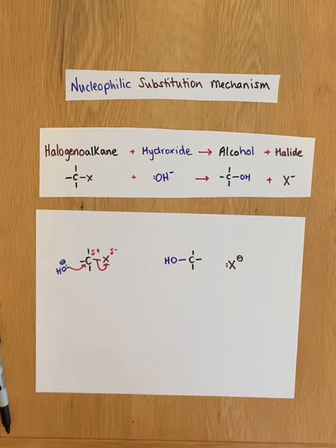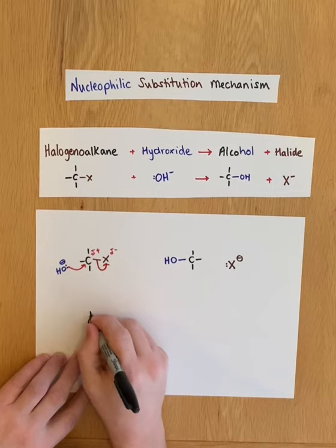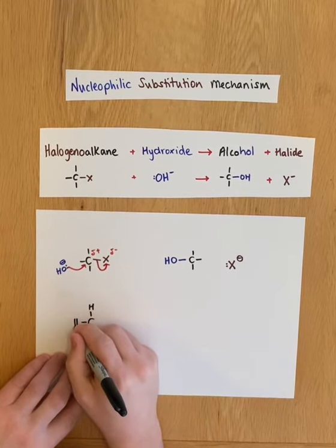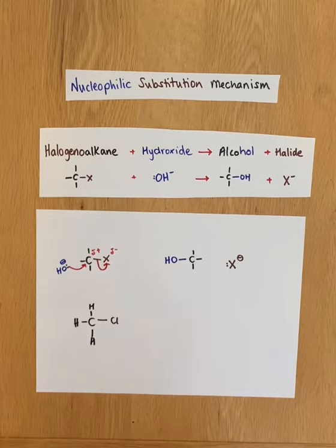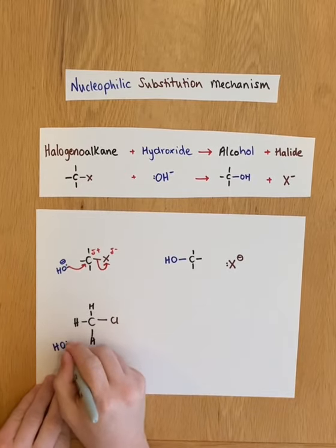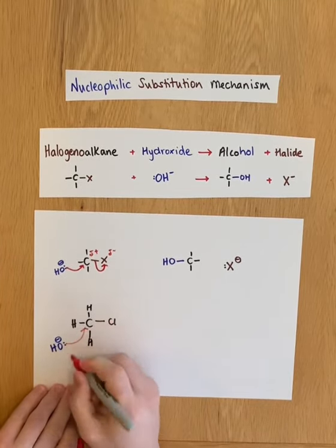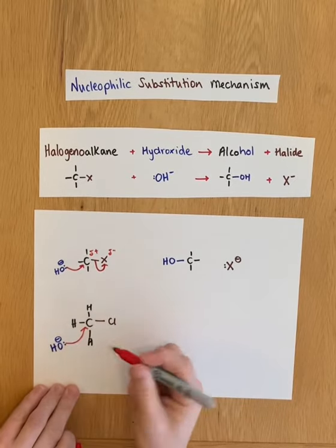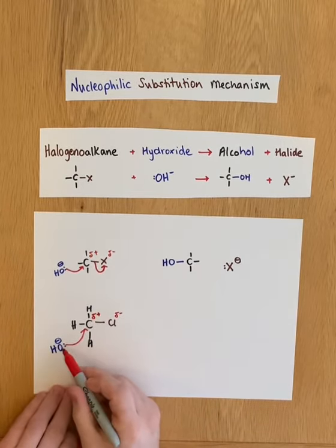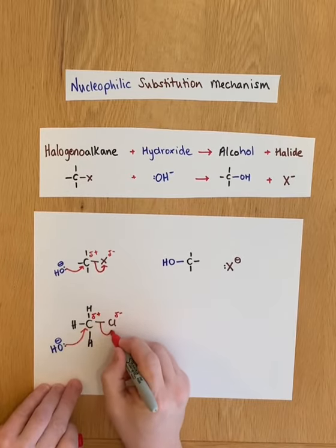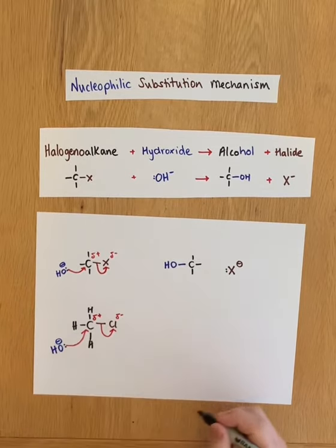If we do an example, what about chloromethane? If I use the same colors, so chloromethane reacting with aqueous hydroxide ions, the pair of electrons, this lone pair, will form a bond to the delta positive carbon. Now I should, in my mechanism, show that this is delta positive, which is why the nucleophile attacks it. While this pair of electrons is forming this new bond, the pair of electrons in the carbon-chlorine bond move onto the chlorine, forming my product.